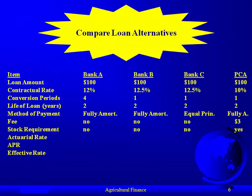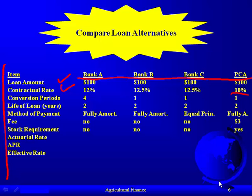We're going to compare these different loans using a chart showing Banks A, B, C, and the PCA. The loan amount is the same for all. Notice there's a difference in contractual rate — the lowest rate is offered by the production credit association, then Bank A, then Banks B and C. Now if you're just looking at the contractual rate, you'd borrow from the PCA at 10%. But that's not our criteria — we have to look at the actuarial rate, the APR, and the effective rate.